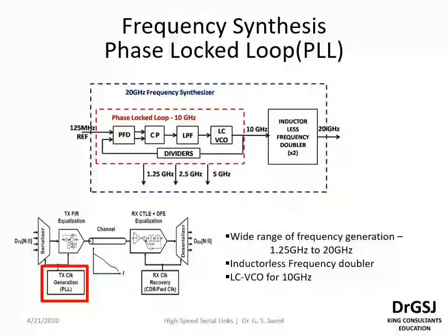A phase lock loop is a feedback system that compares the output phase with the input phase. The comparison is performed by a phase comparator or phase detector. In this particular implementation, we have used a phase frequency detector, which compares both the frequency and the phase of the signal and then locks onto the difference between the two.